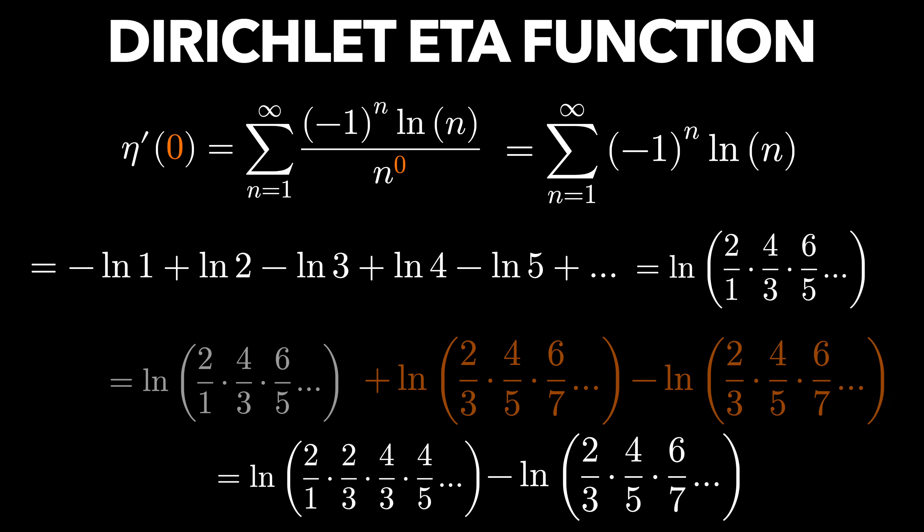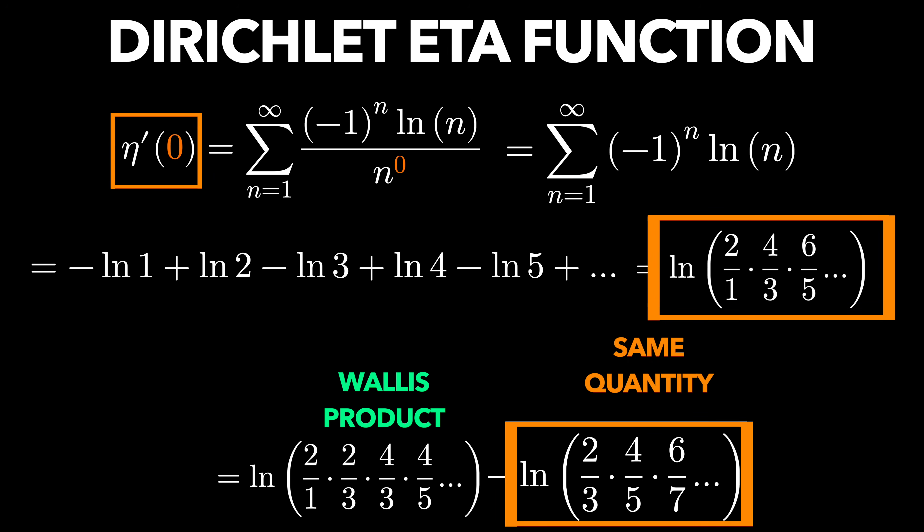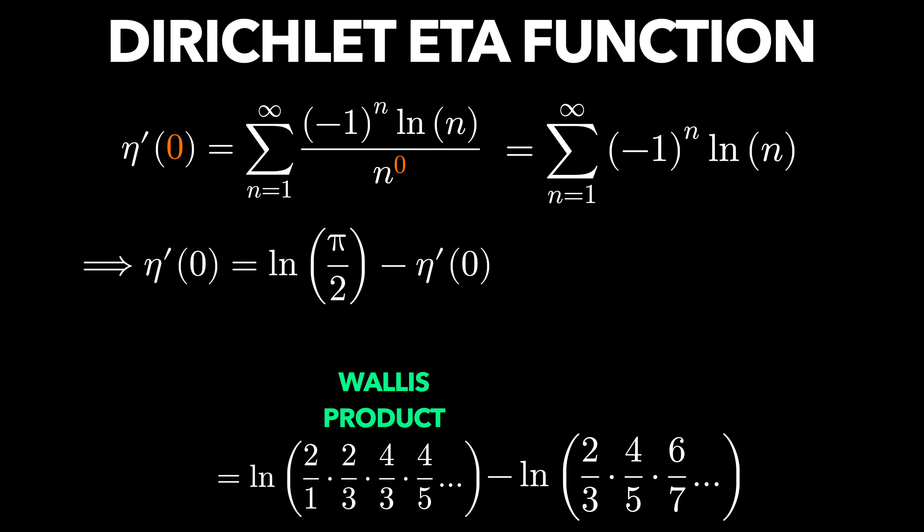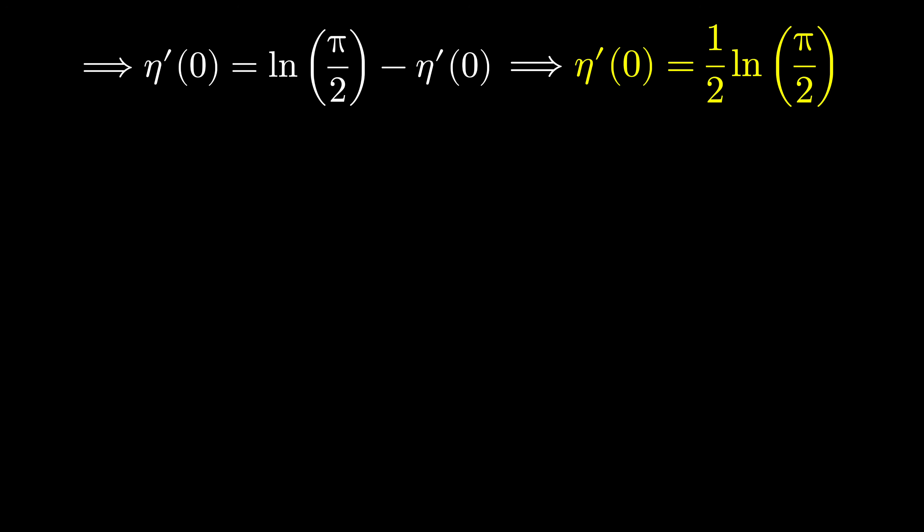This fancy product is called a Wallis product and is equal to pi over 2. The analytic continuation of the Riemann zeta function at s equals zero is minus a half.